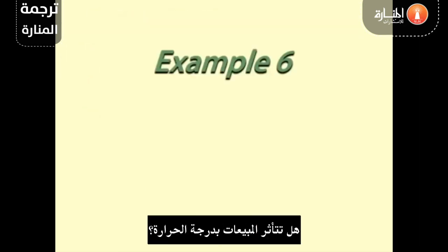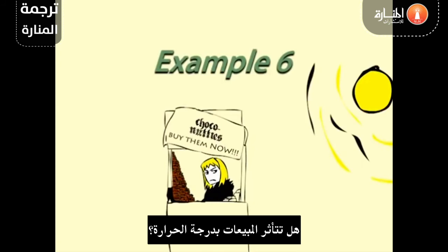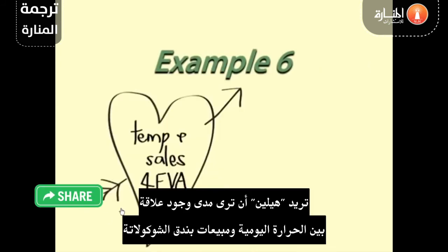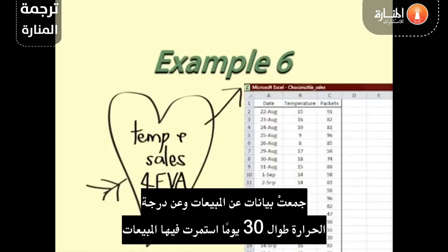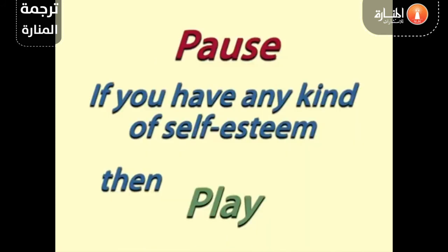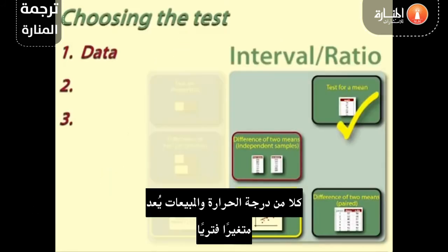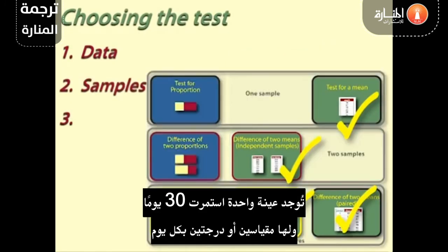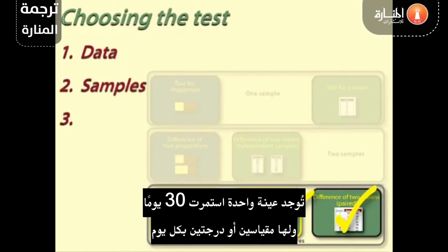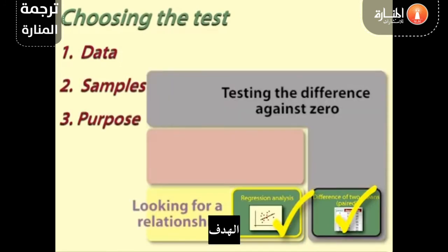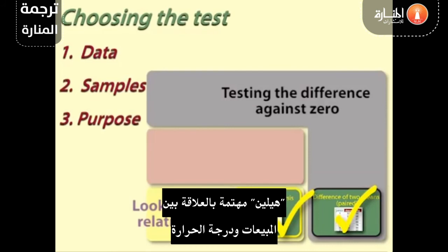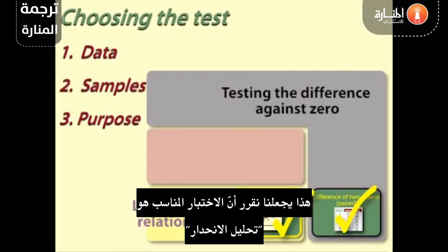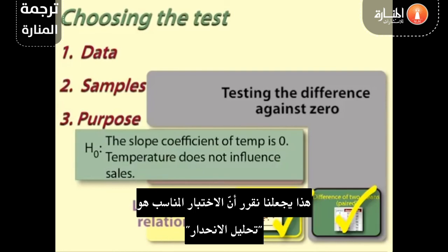Example 6: Are sales affected by temperature? Helen wants to see if there is a relationship between the daily temperature and sales of choc-a-nutties. She has data on sales and temperature for 30 weekdays. 1. Data: Sales and temperature are both interval variables. 2. Samples: There is one sample of 30 days with two measures or scores for each day. 3. Purpose: Helen is interested in the relationship between sales and temperature. This leads us to decide that the test is regression.